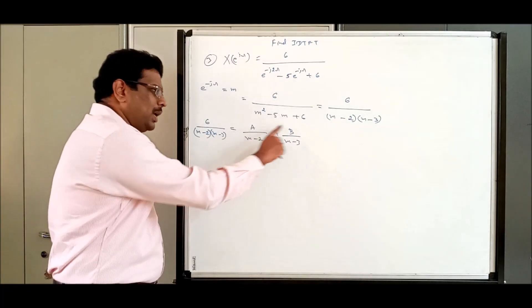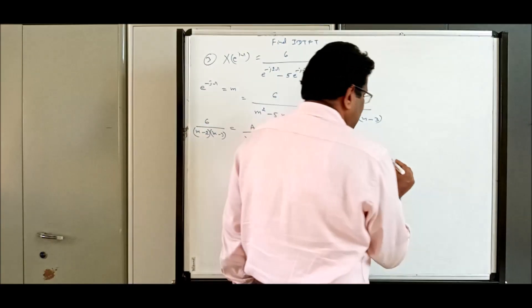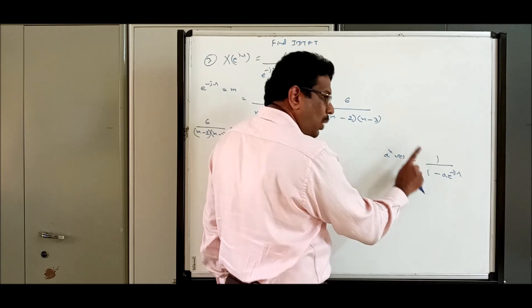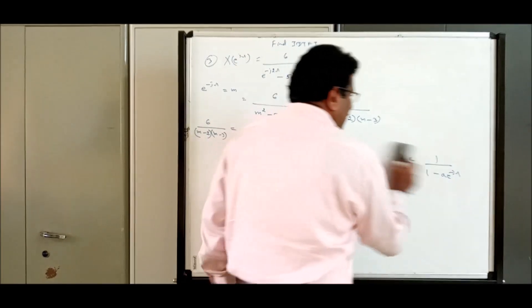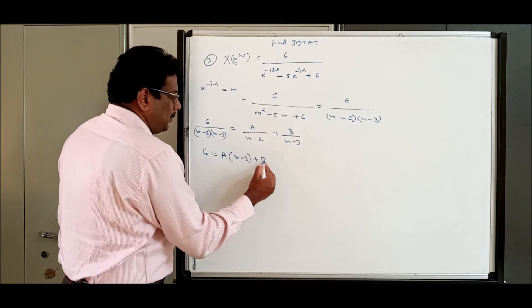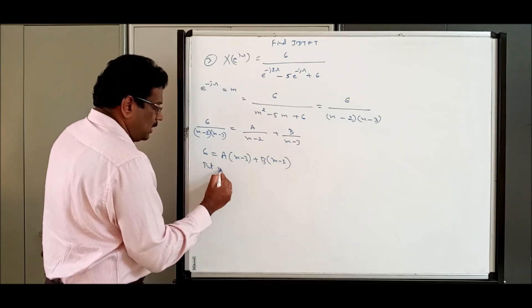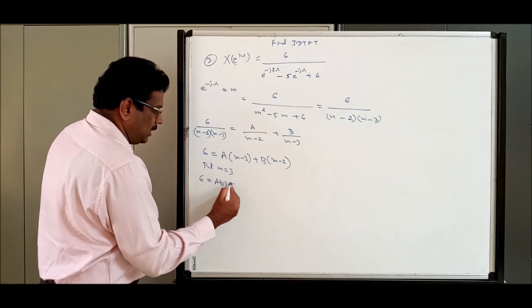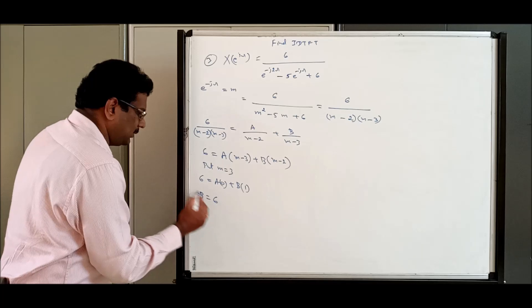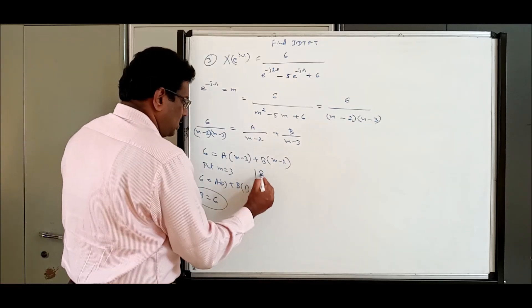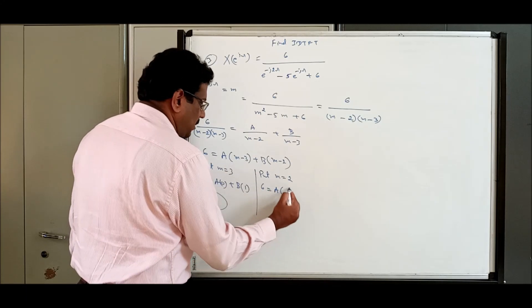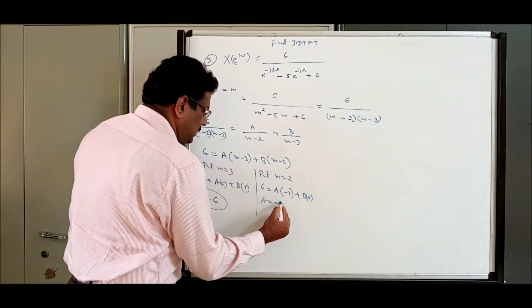Cross-multiplying: 6 = A(m minus 3) + B(m minus 2). Put m = 3: 6 = A·0 + B·1, therefore B = 6. Put m = 2: 6 = A·(2 minus 3) + B·0, so 6 = A·(minus 1), therefore A = minus 6.